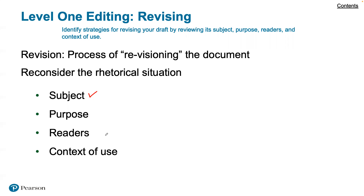For purpose, make sure the document is achieving its purpose. What do you want the document to accomplish or achieve? Is your document's purpose still the same, or has it become more specific or broadened? In terms of readers, consider your readers' characteristics. Do you now know more about your primary reader's needs through your research and development? Have you fully anticipated your readers' values and attitudes? Have you thought about secondary, tertiary, and gatekeeper readers?